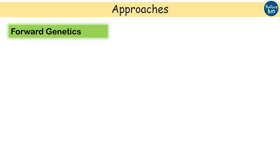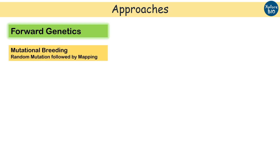Now, what are the approaches used in forward and reverse genetics? In forward genetics, the first approach is mutational breeding. In this, you induce random mutations and generate a mapping population. Next, genetic mapping is done to establish gene-phenotype linkage.